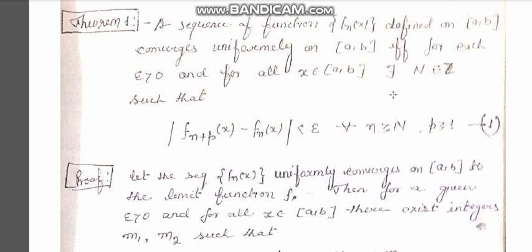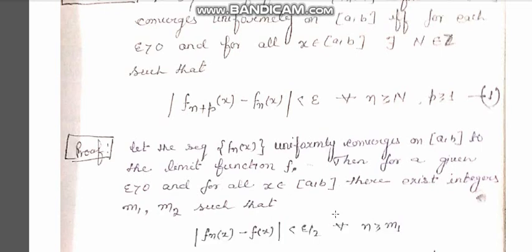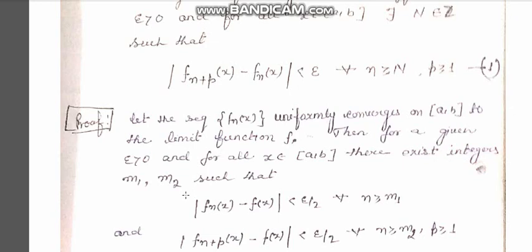We assume this and now we have to prove that the inequality is satisfied. Since the sequence f_n(x) is uniformly convergent on [a, b], for each given epsilon greater than 0 and for all x in [a, b], there exist two integers m1 and m2 such that the modulus of f_n(x) minus f(x) is strictly less than epsilon over 2 for all n greater than or equal to m1.